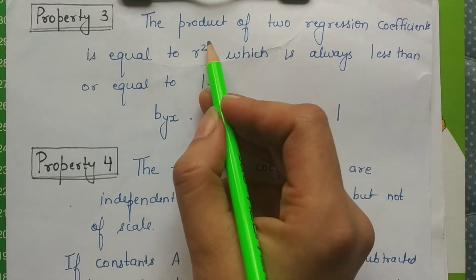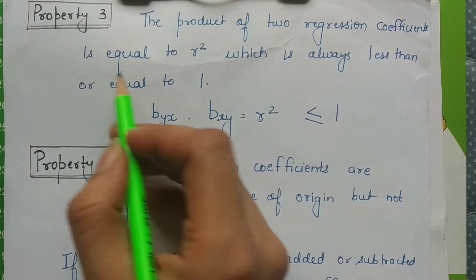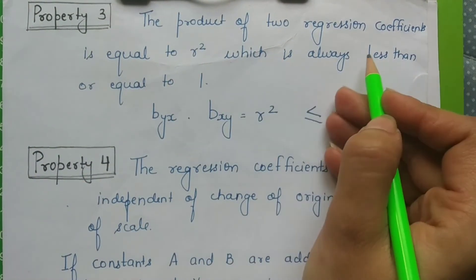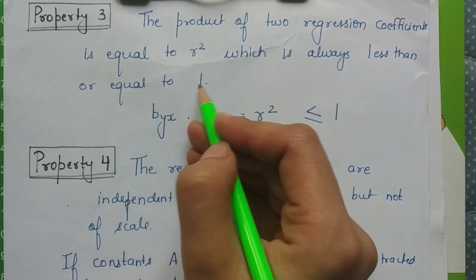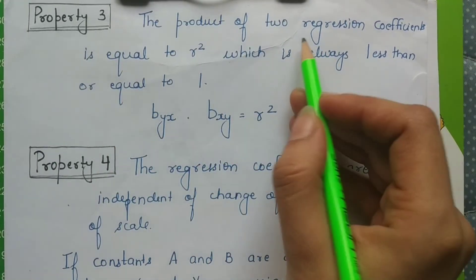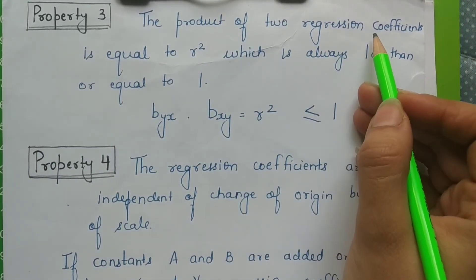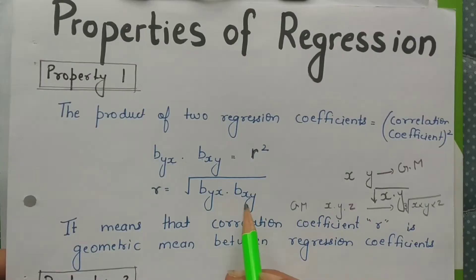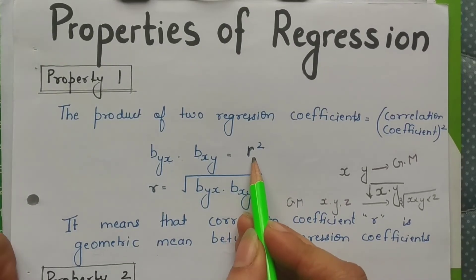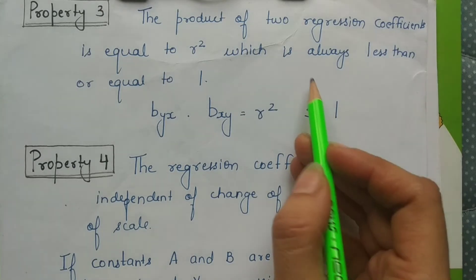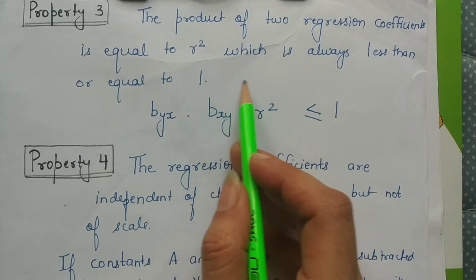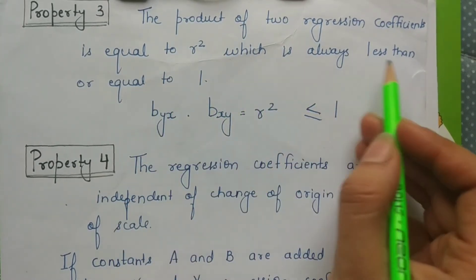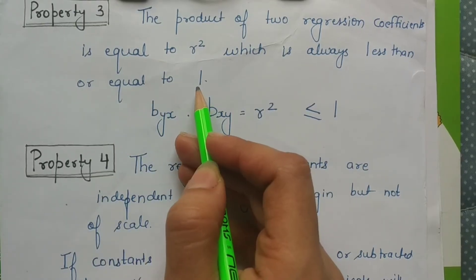Moving to the third property: the product of two regression coefficients is equal to r², which is always less than or equal to 1. When we multiply the two regression coefficients, we get r², and this r² is always less than or equal to 1.